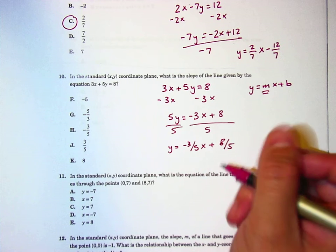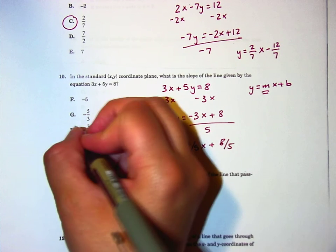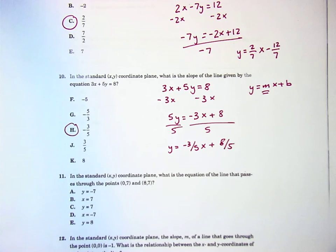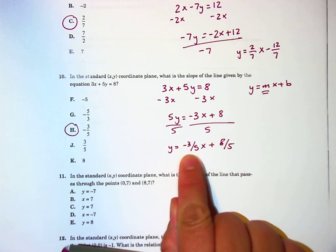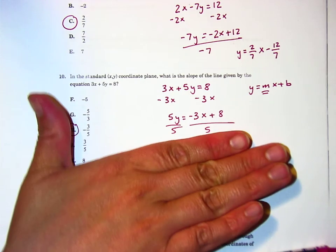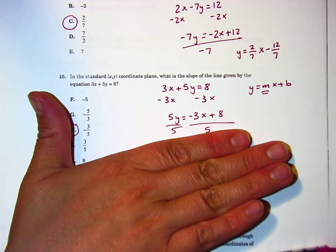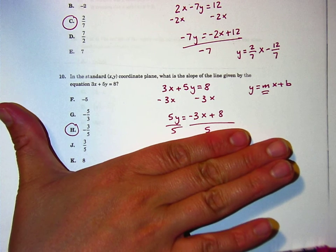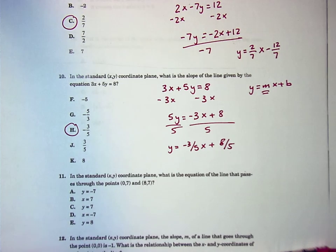So negative 3 fifths right there. Okay. And by the way, remember, you only have to do the problem until you know the answer. So, if you were on this one, and I could see right even here, without doing this step at all, I could see that when I divide that negative 3 by 5, I'm gonna get negative 3 fifths, and I would have just stopped right there and quit, basically.